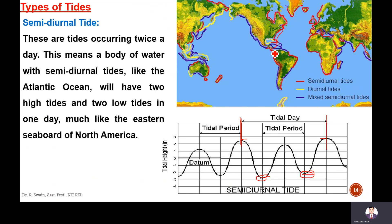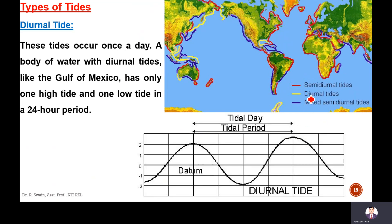Diurnal tides, shown by yellow lines on the map, occur once a day. There is only one high tide and one low tide in a 24-hour period. A body of water with diurnal tides, like the Gulf of Mexico, has only one high tide and one low tide per day. You can see one high and one low in the tidal day plot.